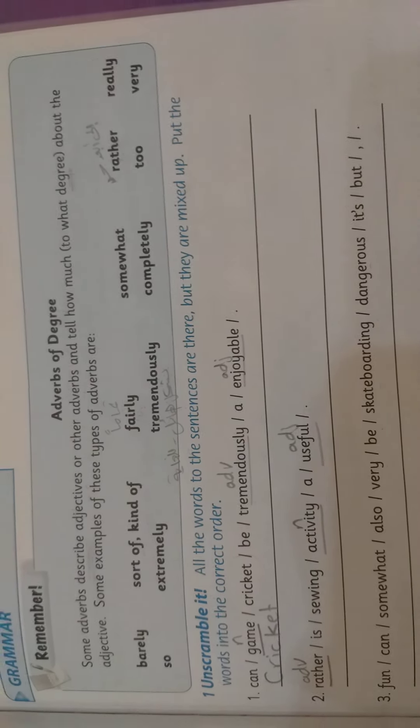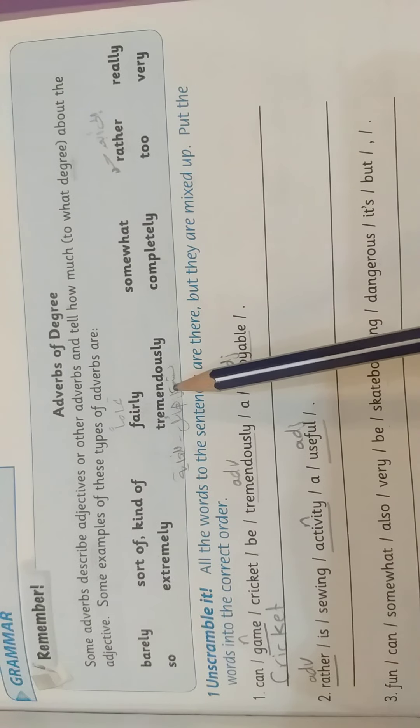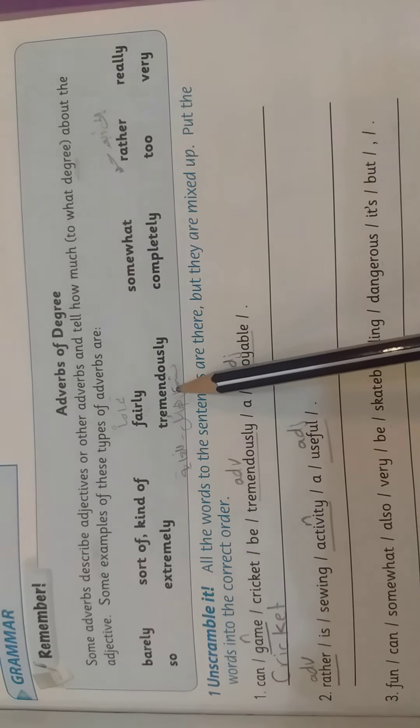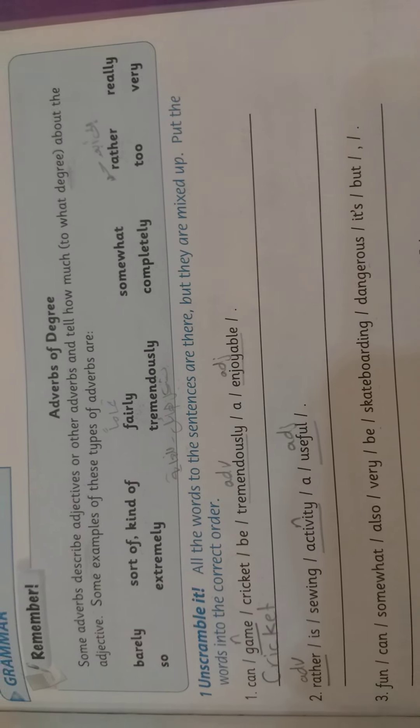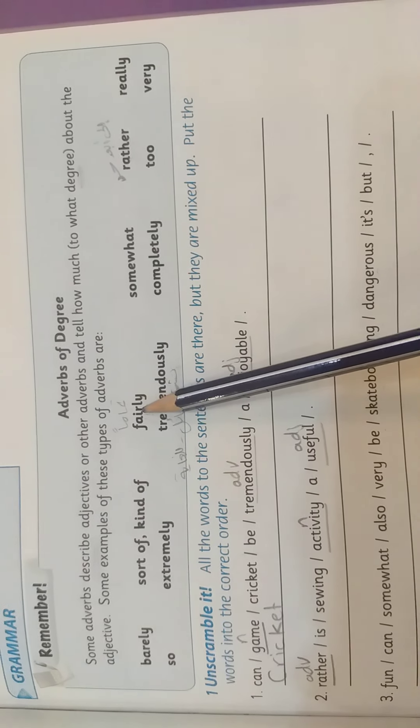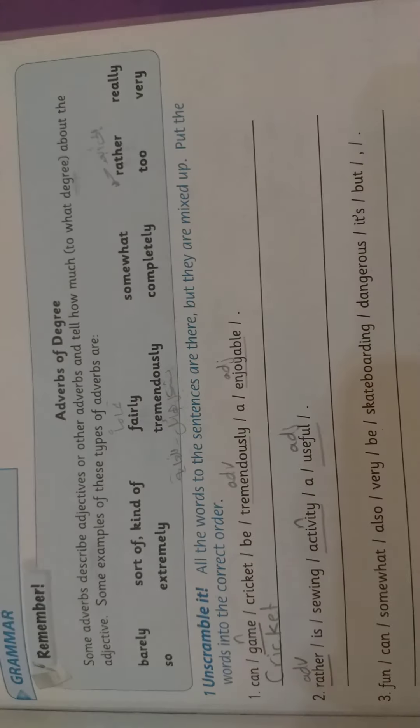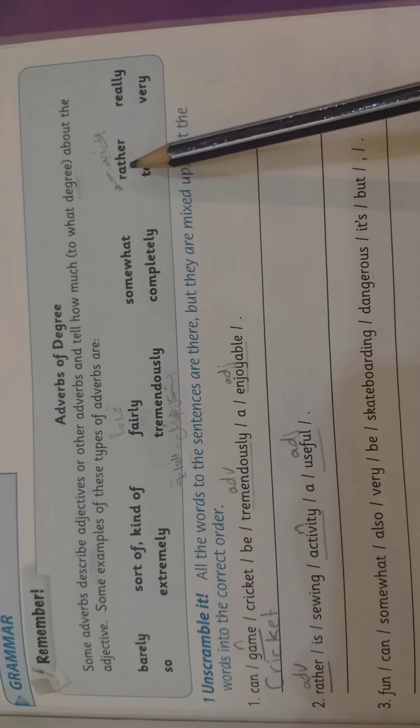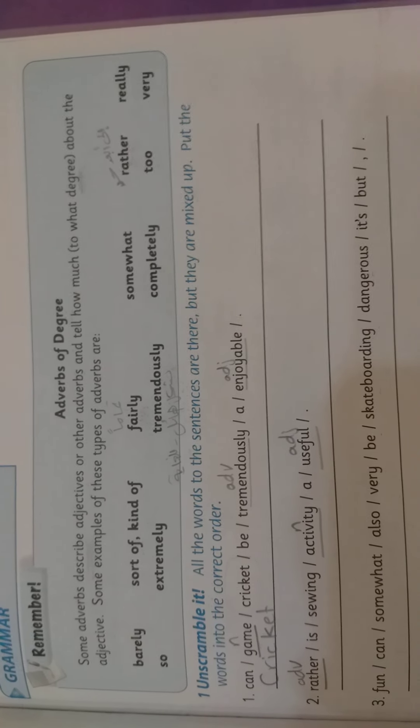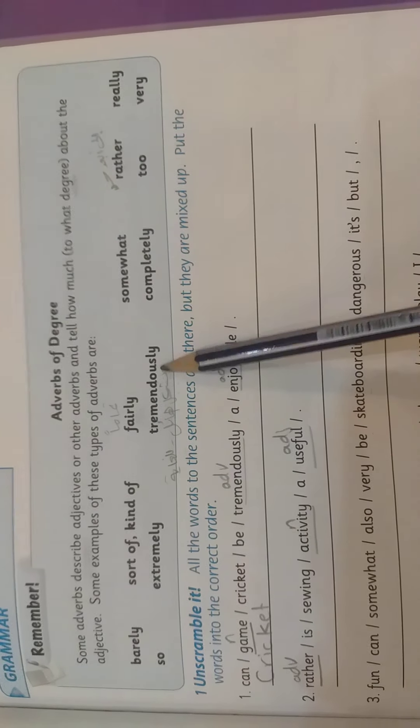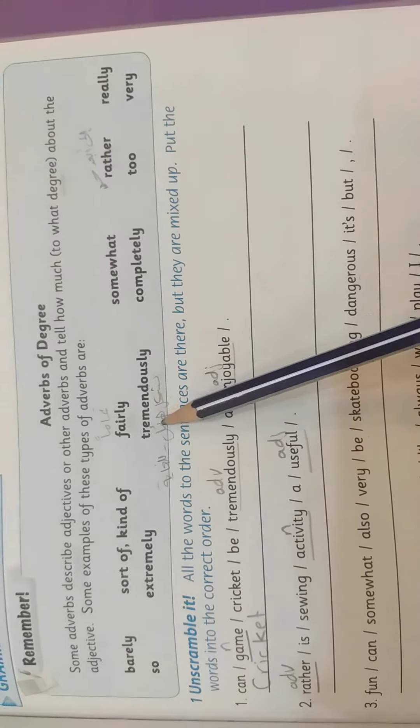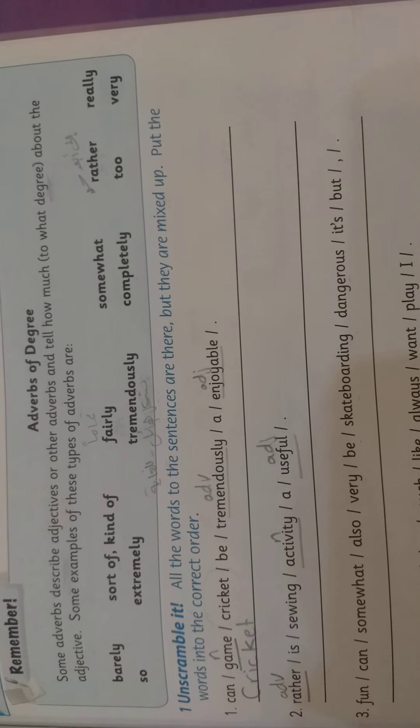Here we have three new adverbs which are fairly, rather, and tremendously. Fairly means تماما and it comes before adjectives and before verbs. Rather means إلى أبعد حد and it comes before adjectives. And tremendously means بشكل هائل أو للغاية أو جدا and it comes before adjectives.